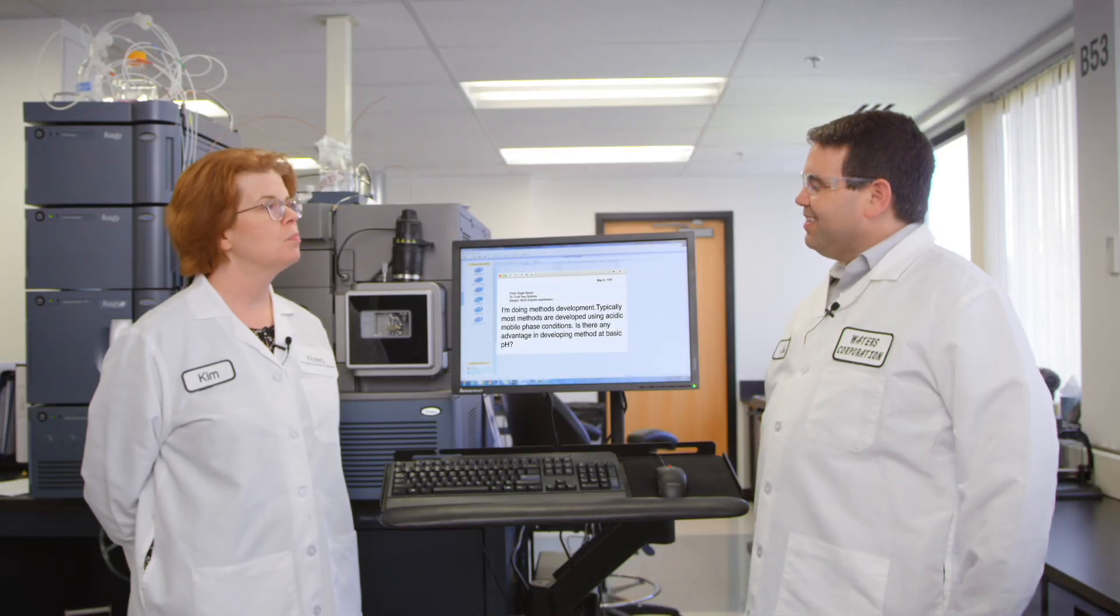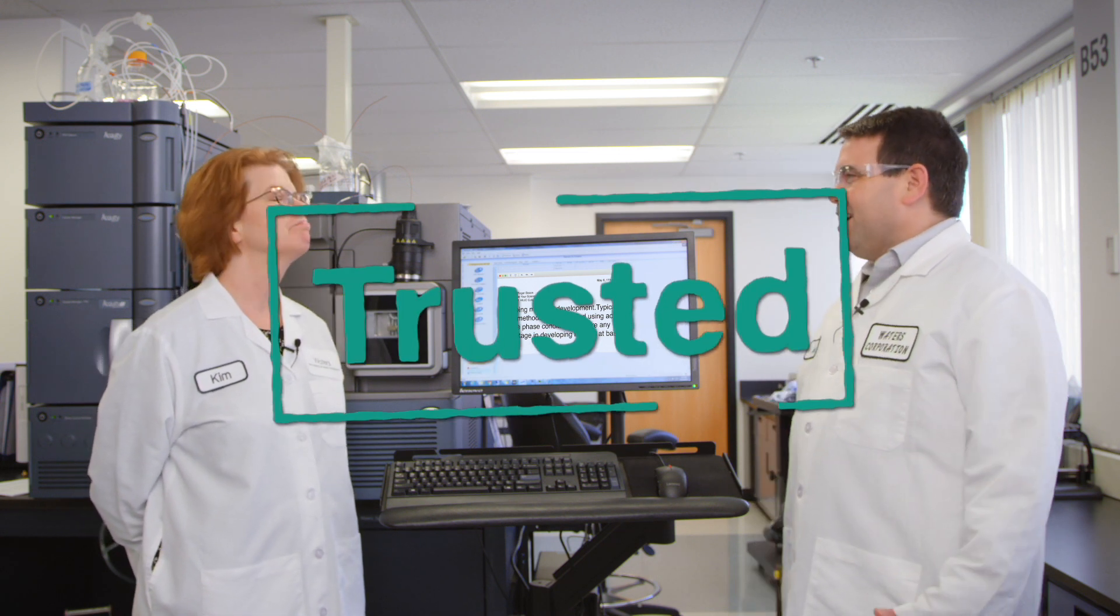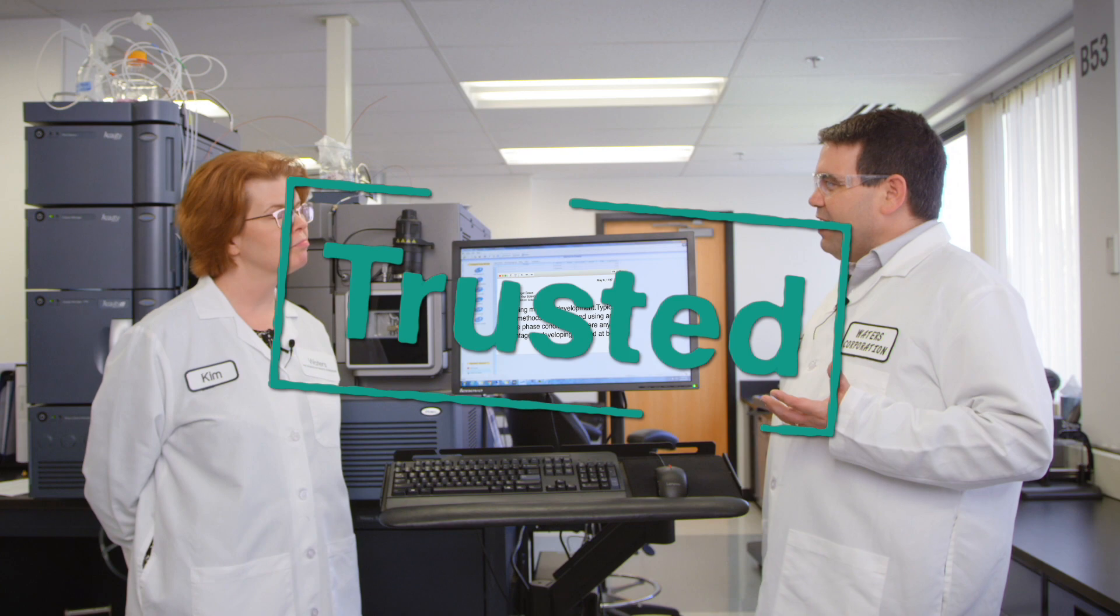So JT, we saw the data. How do you want to call this one? This is trusted. Using high pH mobile phase for methods development, you should be doing this. It's one of the most powerful tools that you can do in chromatography, again, to manipulate your selectivity.